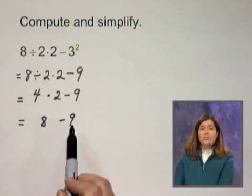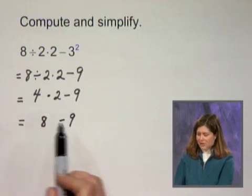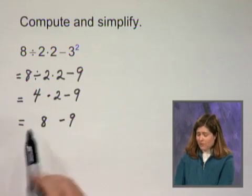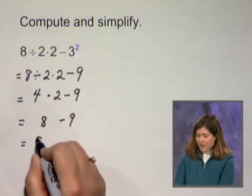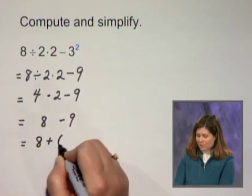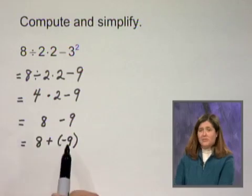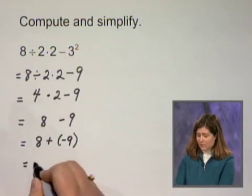There are no multiplications or divisions left, so I move to additions and subtractions and there is one subtraction, 8 minus 9. In order to compute 8 minus 9, I rewrite that as an addition, 8 plus negative 9. And 8 plus negative 9 is negative 1.